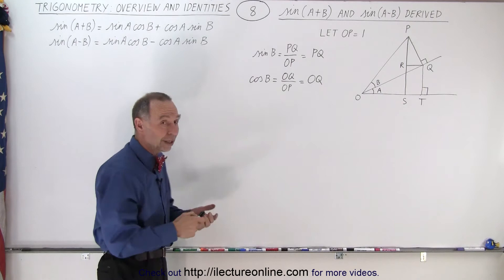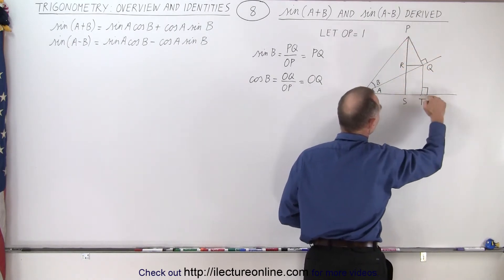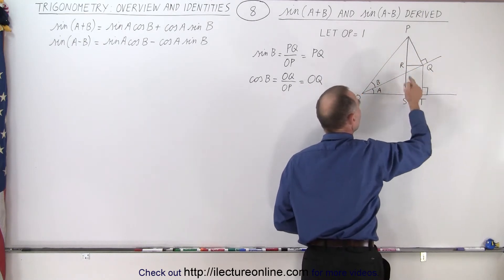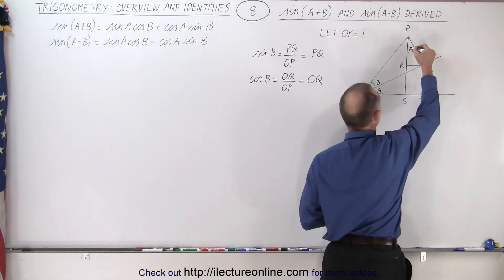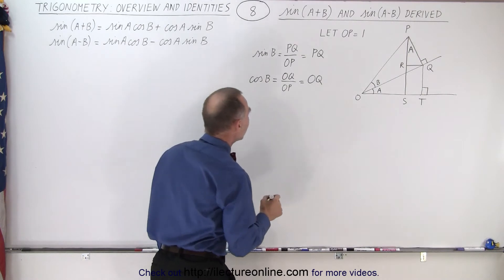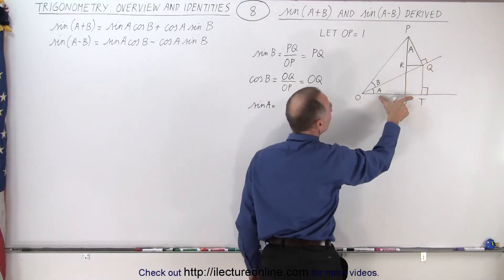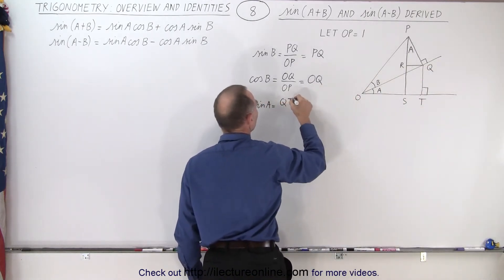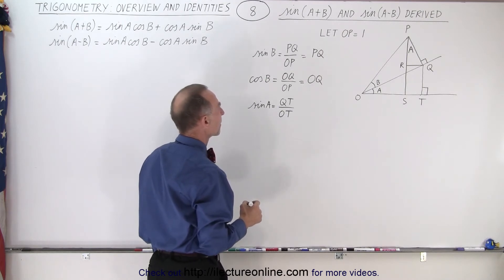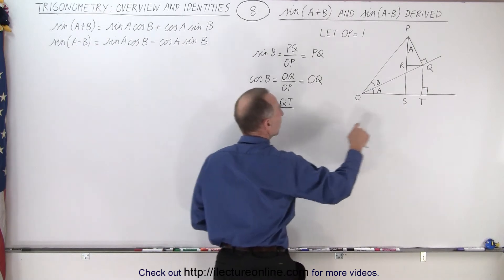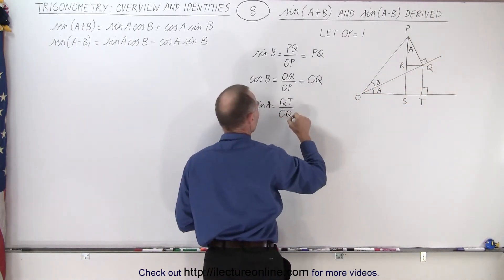So now we need to define sine and cosine in terms of angle a. To help us with that, we're going to use this little triangle up here. Notice that this line is perpendicular to this line, and this line is perpendicular to this line — so the angle between those two lines must equal the angle of these two lines, meaning that angle must equal a as well. The sine of a is equal to the opposite side QT divided by the hypotenuse OQ.